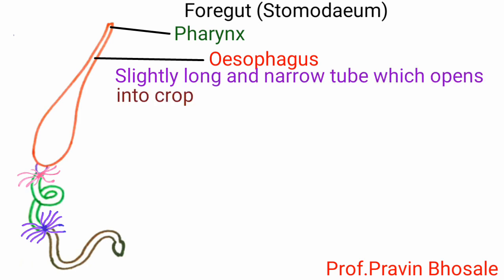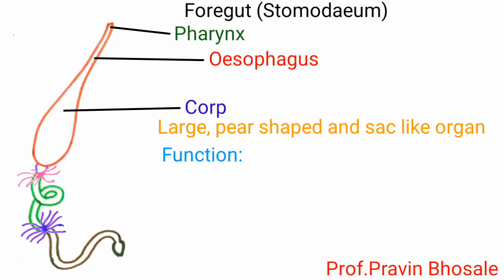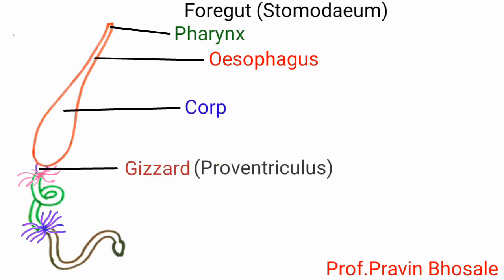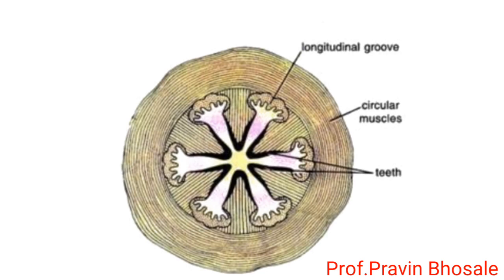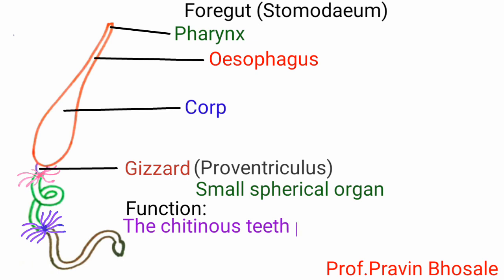Esophagus is a slightly long and narrow tube which opens into the crop. Crop is a large pear-shaped, sac-like organ. Its function is to temporarily store the food and then send it to the gizzard. Gizzard, or proventriculus, is a small spherical organ provided internally with a circlet of six cutaneous teeth and backwardly directed bristles. The foregut ends with the gizzard.